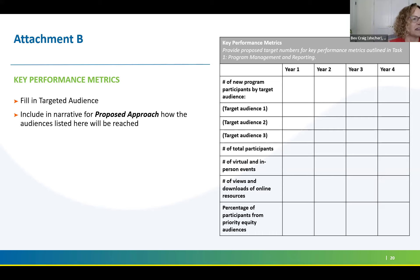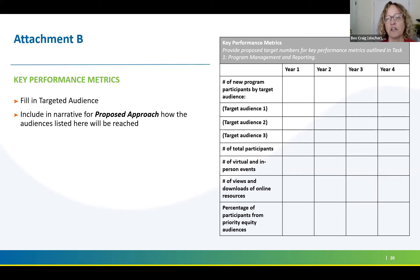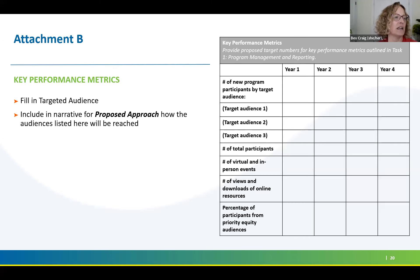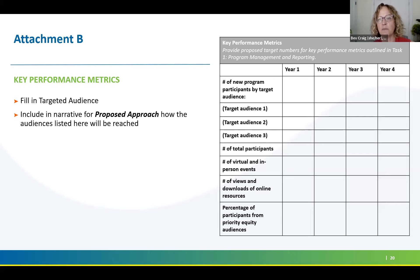Things to track include the number of in-person and virtual events and webinars, views and downloads of online resources, and the percentage of participants from priority equity audiences. The RFP specifies that content for building professionals servicing affordable housing and public housing should be at least as much as other building types, and that owners with only one or two buildings have lower capacity. Religious worship, schools, public assembly, and nonprofit owners are all groups you might want to track separately.